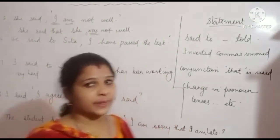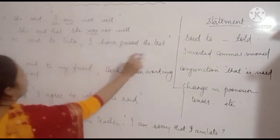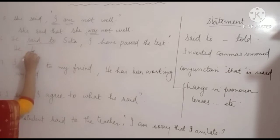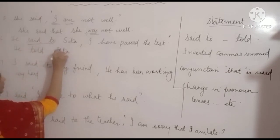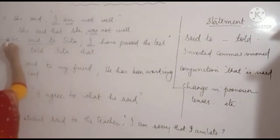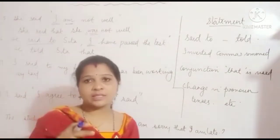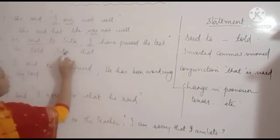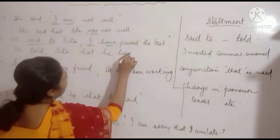Example 6: 'He said to her, I have passed the test.' 'Said to' becomes 'told'. We write: He told her that. 'I' changes according to the subject — subject is 'he'. 'Have passed' changes to past perfect: 'had passed'. Answer: He told her that he had passed the test.